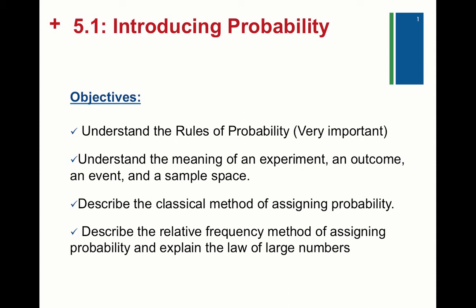We're going to talk about the classical method of assigning probability — things like the probability of flipping heads when you flip a coin, which is one-half or 50%, or the probability of rolling a two when you roll a die, which is one out of six. We'll also look at the relative frequency method. Relative frequency is the frequency of the event happening divided by the total number of observations, so it gives us a proportion, which can be converted to a percentage and interpreted as a probability. Once we do the relative frequency method, we'll talk about the law of large numbers.